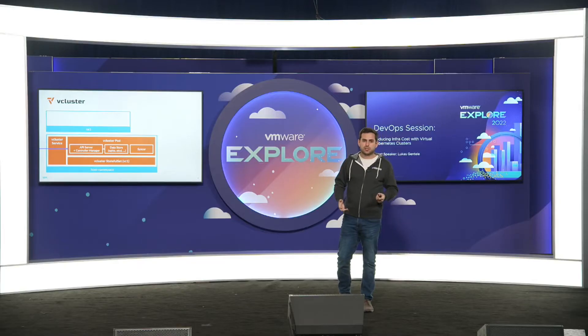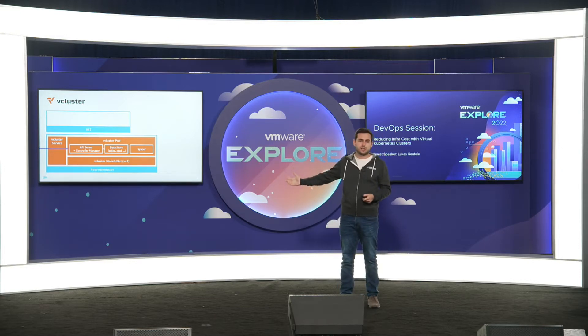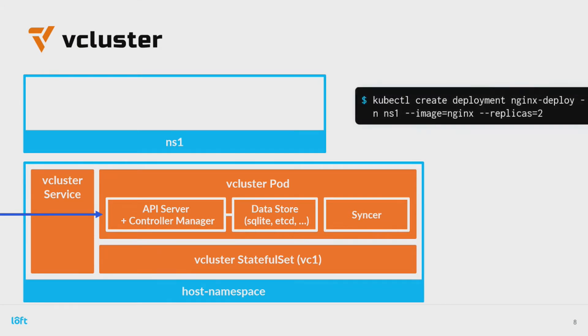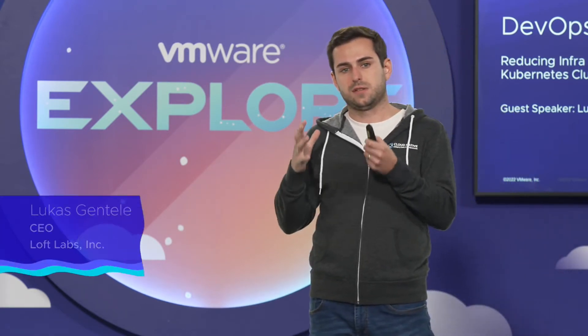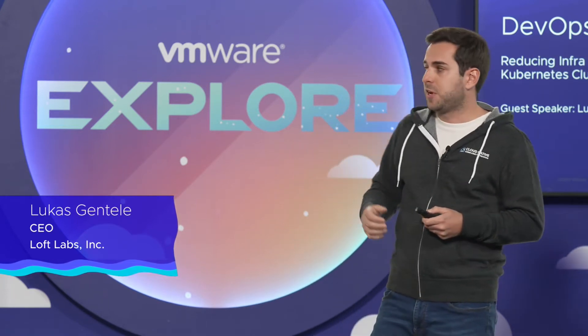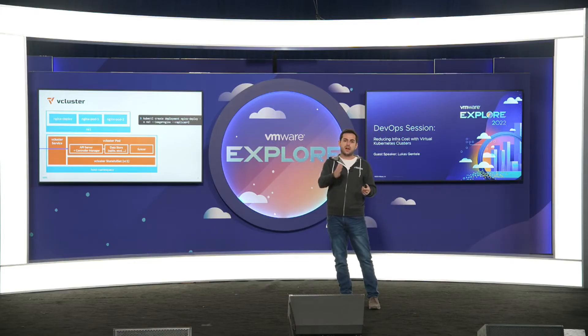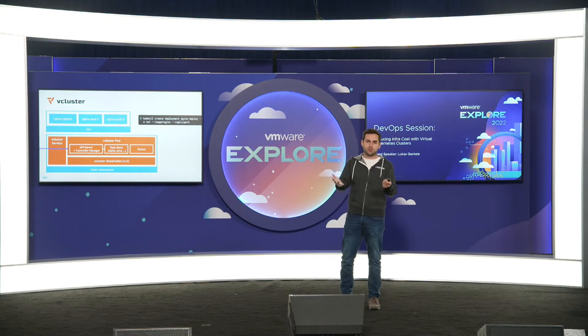Now let's say we want to launch an application. Let's say we want to launch nginx — we create a deployment in Kubernetes with kubectl. We run this kubectl command against the virtual cluster's API server, and then we write another entry in the data store for the virtual cluster. We now have a deployment called nginx inside the virtual cluster, but in the underlying cluster you won't see that — it only exists in the virtual cluster's isolated data store. Because we have a controller manager and defined replica number two, we're creating two pods, with two containers running our nginx instance.